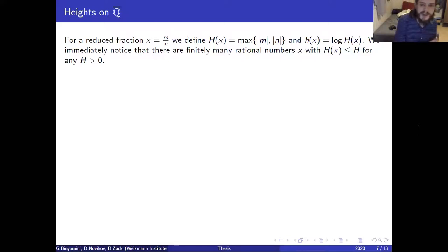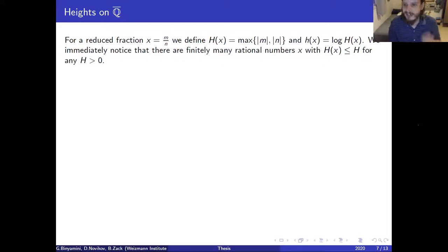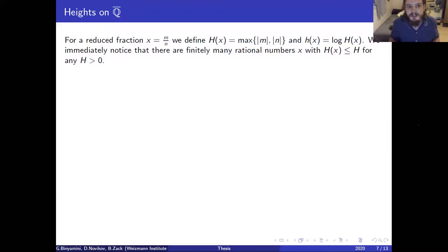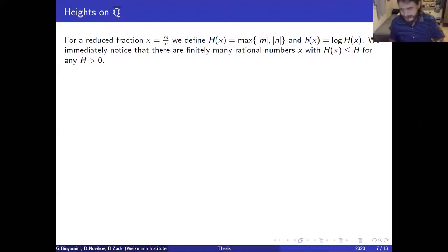A more meaningful answer than 'finite' or 'infinite' is to count the number of rational points on a variety of height at most H, then let H → ∞ and look at this asymptotically. Heights can serve as a kind of density on the rationals. I want to convince you that height is much more intelligent than it first appears — it has a very intelligent definition.